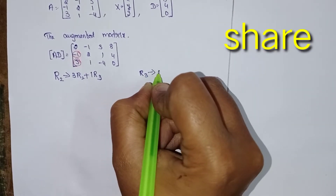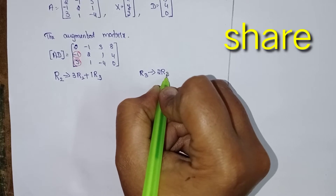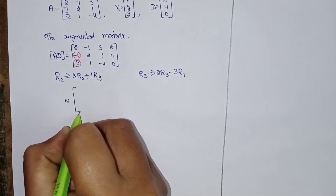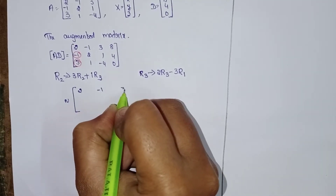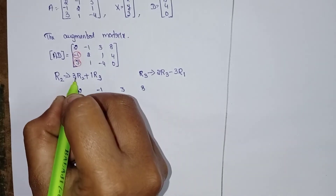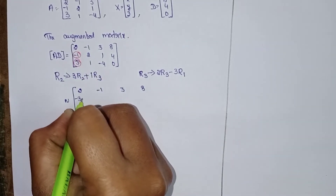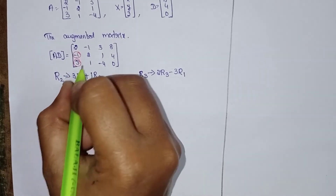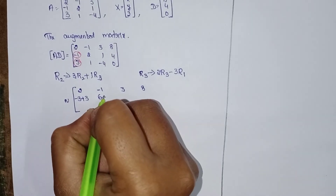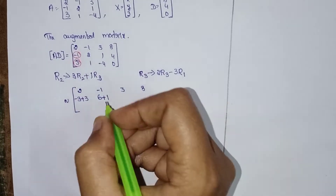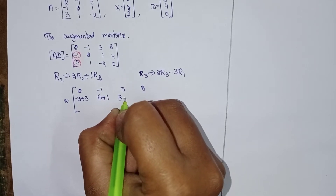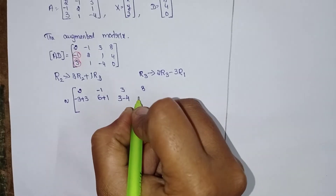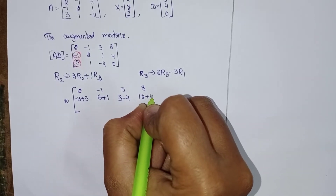In R2, apply 3 times R2 plus 1 time R3. In R3, apply 2 times R3 minus 3 times R1. We didn't disturb R1 — it stays as it is. 3 times R2: 3 twos are 6, plus 1 time R3: 1 into 1 is 1. 3 times R2 plus 4 times R3.